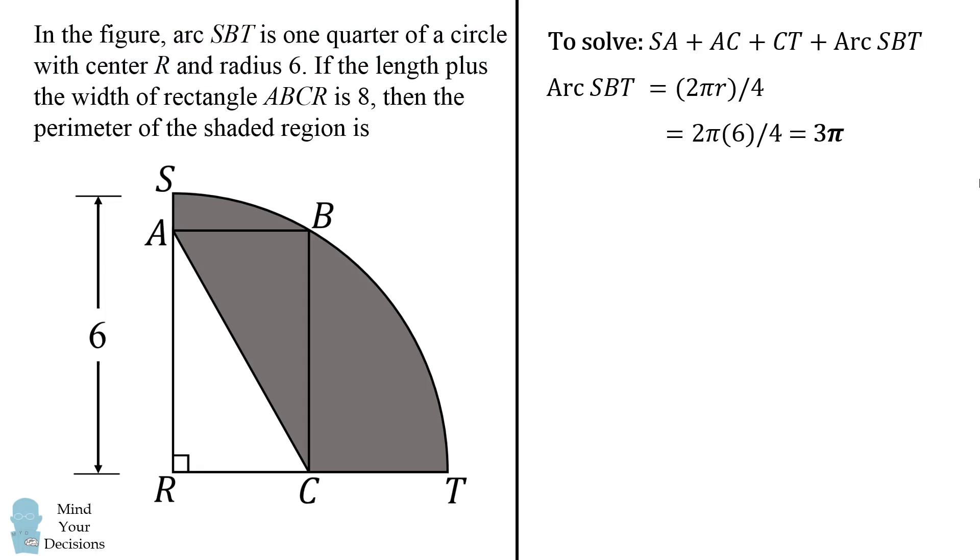Now, how do we solve for the length of SA plus AC plus CT? This seems very difficult because we don't know the length of SA or CT, and it seems like we can solve for AC using the Pythagorean theorem because we have a right triangle, but that also seems like it would be pretty complicated.